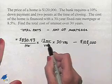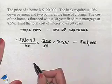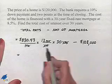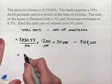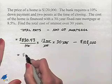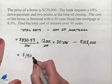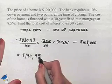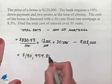Calculating here, notice that when we divide out our units, we end up with a dollar amount. And we subtract from that $108,000, giving us a total amount for interest of $190,954.80.